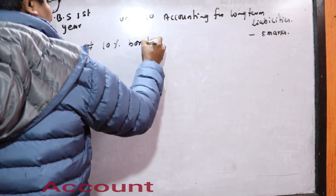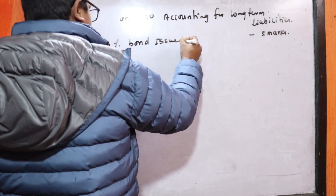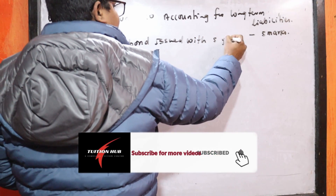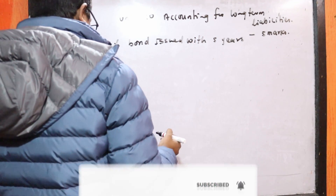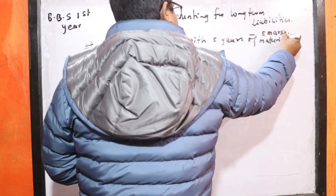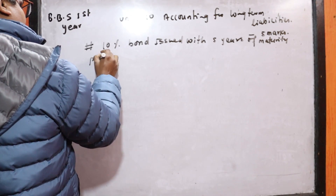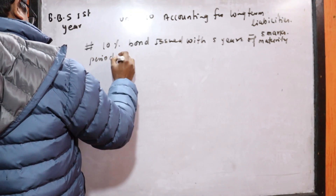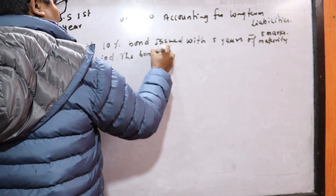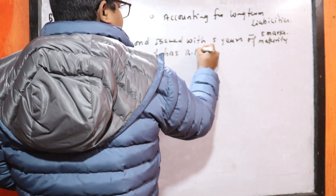We are going to talk about a 10% bond issued with a 5-year maturity period. The bond has a face value of Rs. 1000.